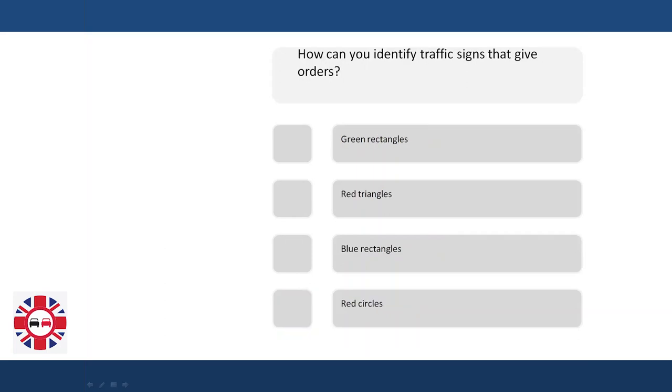How can you identify traffic signs that give orders? Green rectangles? Red triangles? Blue rectangles? Red circles?